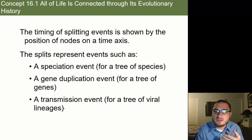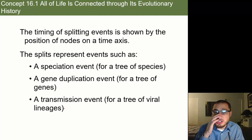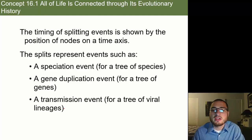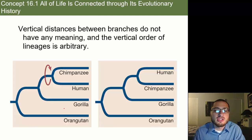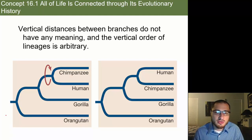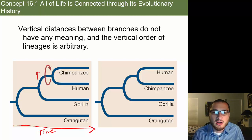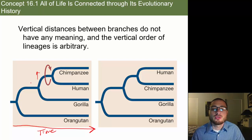You can also use nodes to represent a gene duplication event — how a gene stayed the same and then a mutation occurred, so some organisms ended up with the changed gene and others with the old gene. Or even a transmission event if you're looking at viral lineages like COVID-19 or HIV. As for vertical distances between branches, they do not have any meaning — the horizontal axis represents time. For our purposes, you don't need to worry about vertical distance.